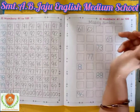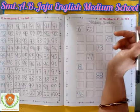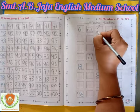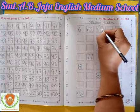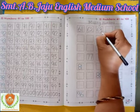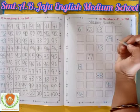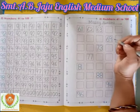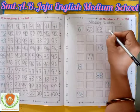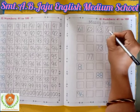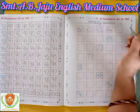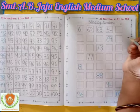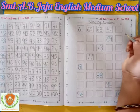After 62, which number comes? 63. First write down 6, then write down 3. 63. Then which number comes after 63? Write down 4. 64. 6, 4 — 64.